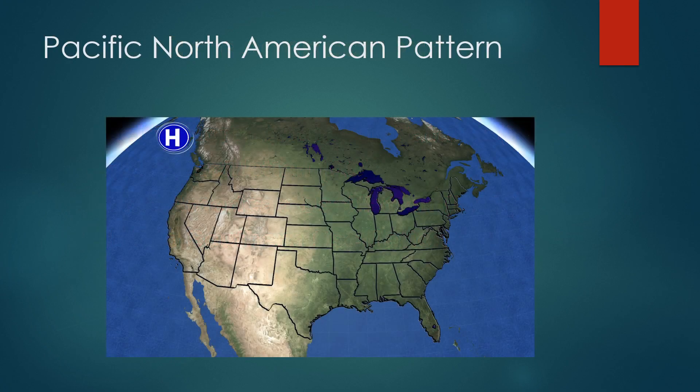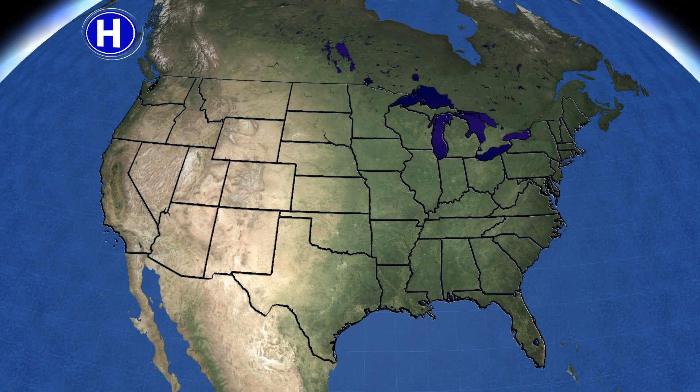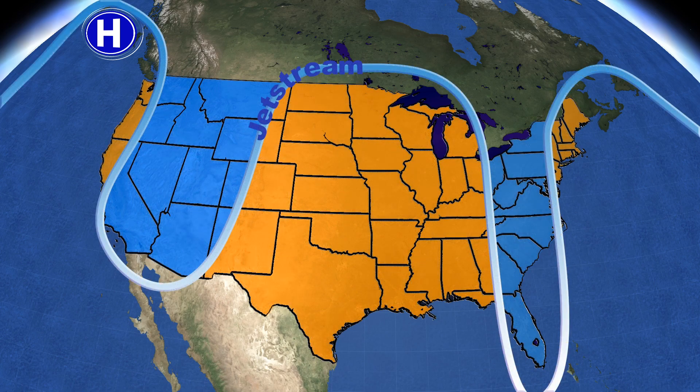The Pacific North American pattern, or the PNA for short, is a large and constant high or low pressure just off the southern coast of Alaska. A positive index is associated with an area of high pressure, and a negative index is associated with an area of low pressure. This pressure affects the jet stream position and can affect temperature and precipitation across the continental United States. A positive index is usually correlated with cool temperatures and increased precipitation on the western half of the country and in portions of the far southeastern part of the country, while the eastern half and the northwest tend to remain drier and warmer.